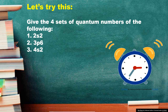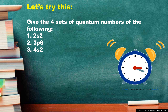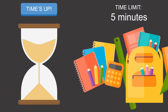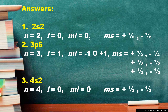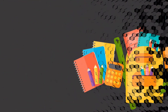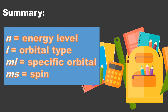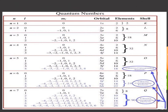Now let's try this. Give the four sets of quantum numbers for the following: number 1, 2S2; number 2, 3P6; and number 3, 4S2. You have 5 minutes to answer. Time's up — let's check your answers. Did you get it right? I hope so. To sum up: N is the energy level, L is the orbital type, ML is the specific orbital, and MS is the spin. You can also check the table for the summary of the lesson. I hope you learned something new today. We'll see you on my next video. Thanks for watching!